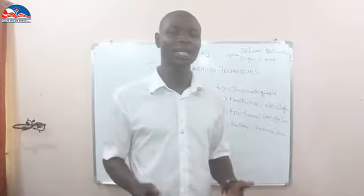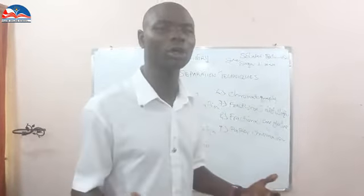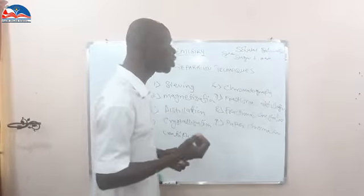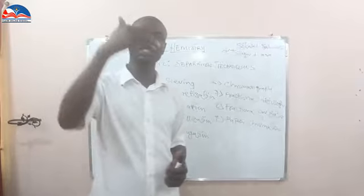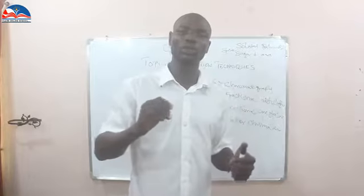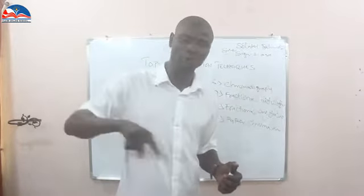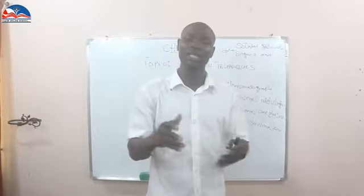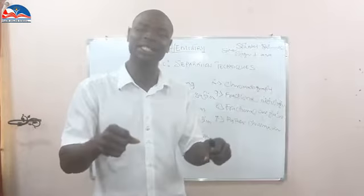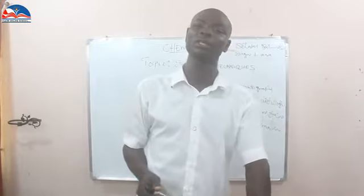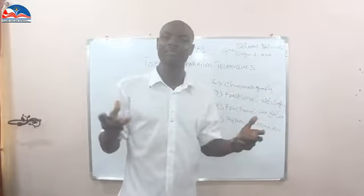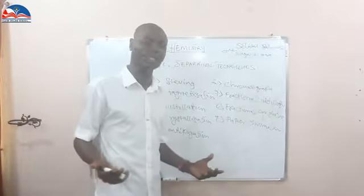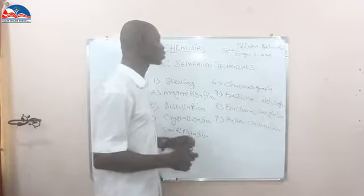Number five — centrifugation. Centrifugation is the process whereby you separate plasma from blood, or you separate a substance of lower density from one of higher density. When you place blood inside a tube and put it into the centrifugal machine and switch it on, as it turns you will see plasma on top and blood at the bottom. The density of plasma is lower while that of blood is higher, which makes the blood settle at the bottom. That is centrifugation.